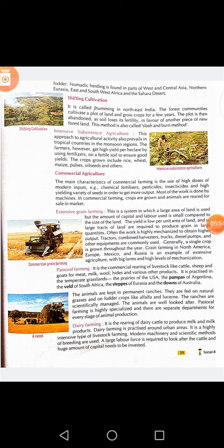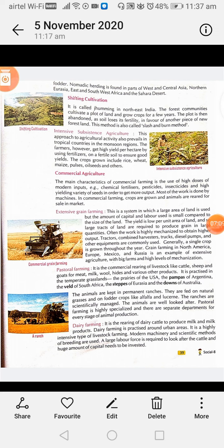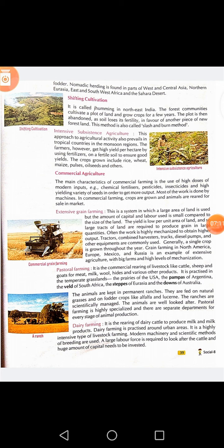Tractors, combined harvesters, trucks, diesel pumps and other equipment are commonly used. Generally, a single crop is grown throughout the year. Grain farming in North America, Europe, Mexico and Russia is an example of extensive agriculture, with big farms and high level of mechanization.